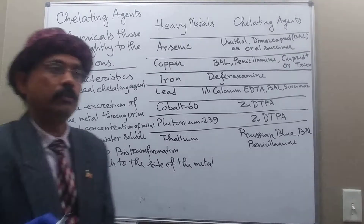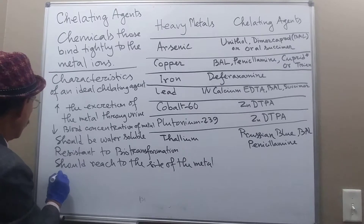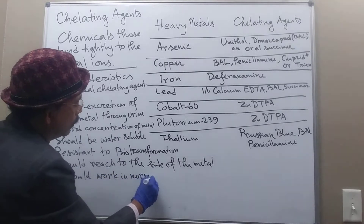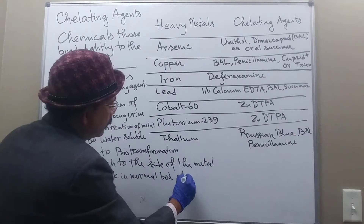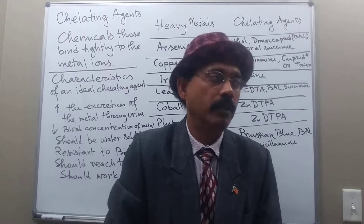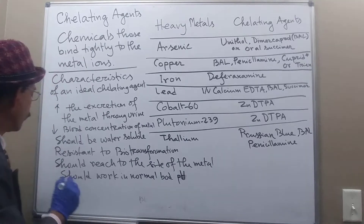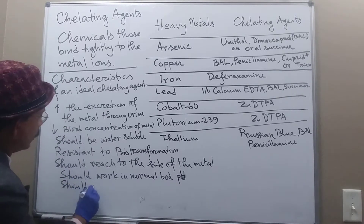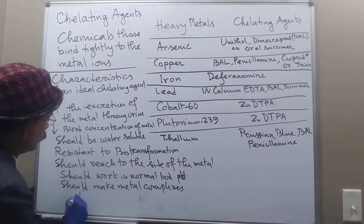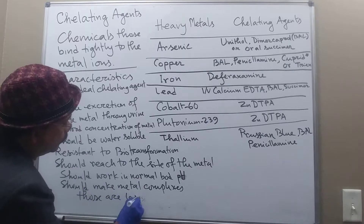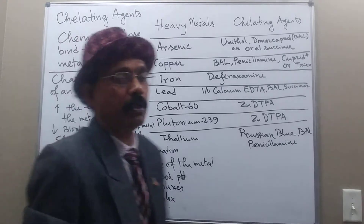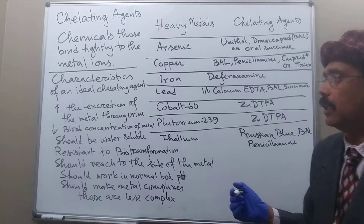The chelating agent should retain the ability to work in normal body pH — that is, the negative logarithm of hydrogen ion concentration. It should also form metal complexes that are less toxic, so that they can be excreted through the urine very easily.